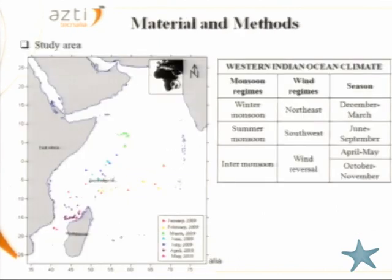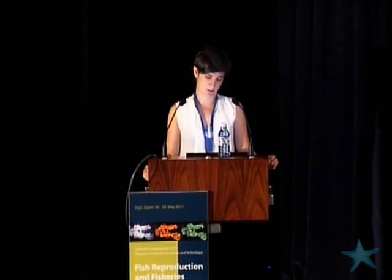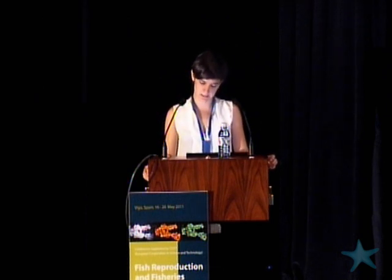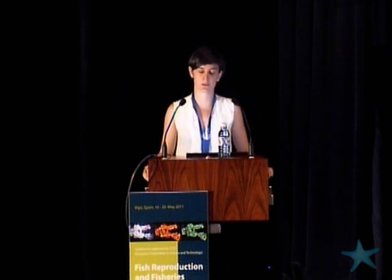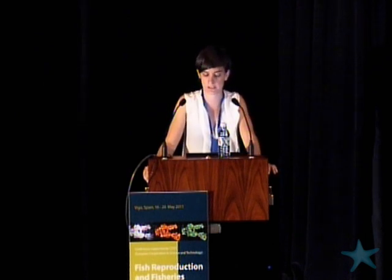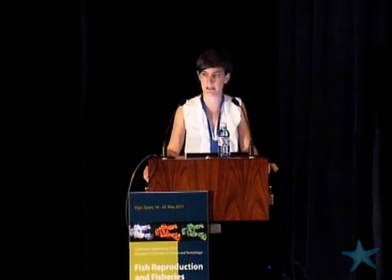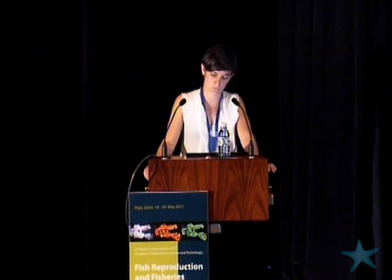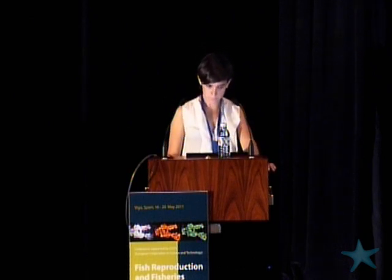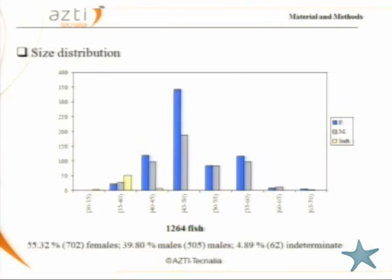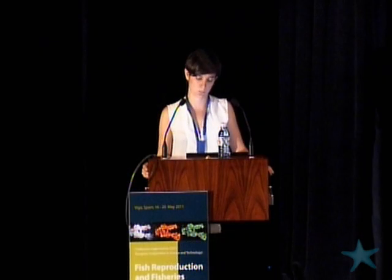Our study is based in the Western Indian Ocean. This area is dominated by monsoon regimes and can be divided into three seasons depending on wind rates: winter monsoon season, summer monsoon season, and inter-monsoon season. Our sampling was carried out on fishing vessels from January 2009 to April 2010. We wanted to cover all trimesters in 2009, but because of the piracy problem we couldn't, so we completed the work in 2010. Overall, we sampled more than 1,200 fish and more than 50% were females. We collected female ovaries and took other measures such as fork length, gonad weight, and total weight.